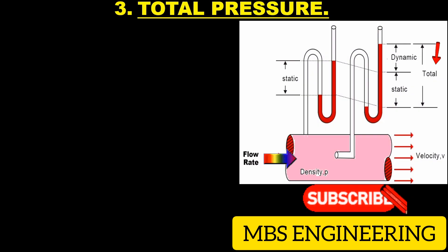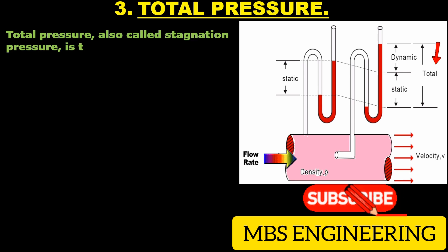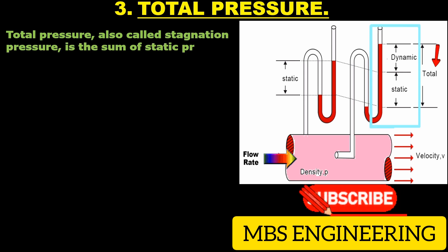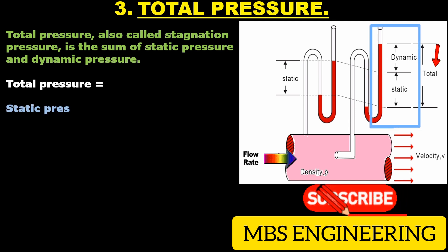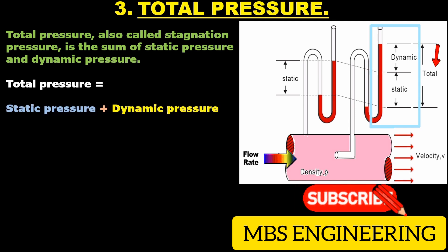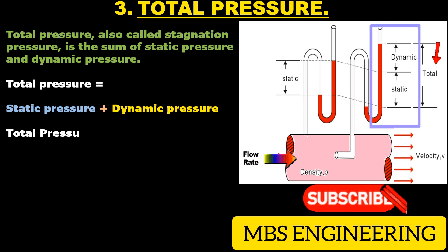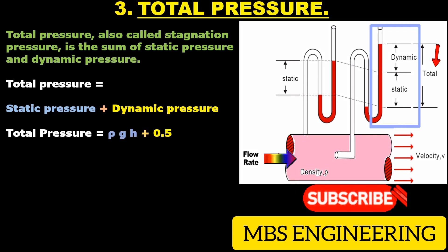We will learn and understand total pressure. Total pressure, also called stagnation pressure, is the sum of static pressure and dynamic pressure. The total pressure equals static pressure rho gh, plus dynamic pressure 0.5 times rho times V squared.